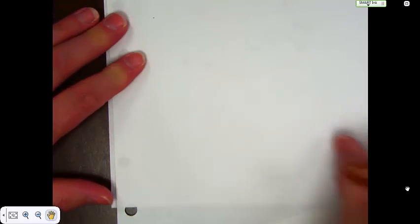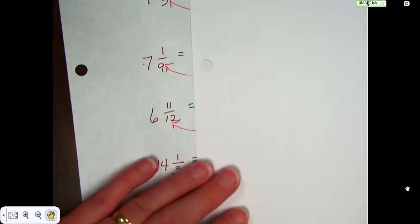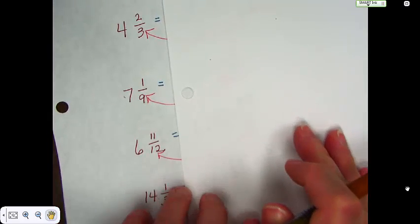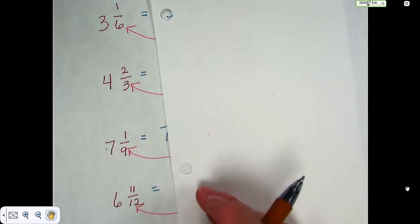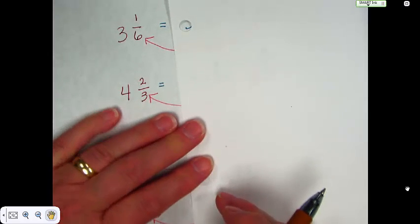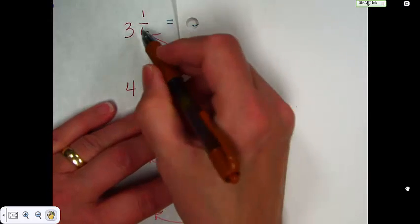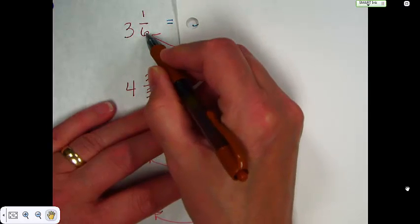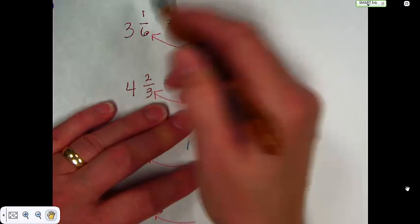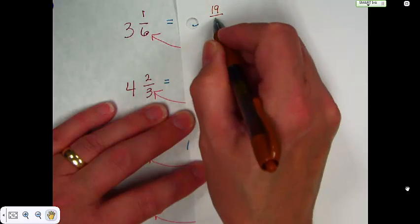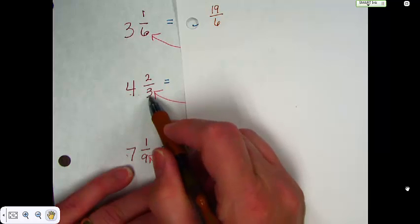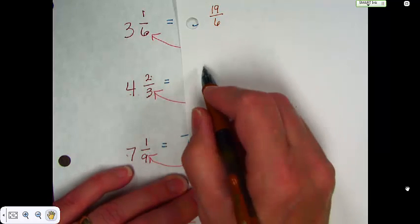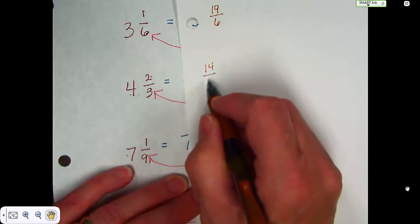So, we're going to do just a few for practice here. I'd like you to do them at your desk while you're listening to the video. We have 3 and 1 sixth. So, we're going to take 3 times 6, which is 18, plus 1, which is 19 over 6. 4 times 3, which is 12, plus 2, 14 over 3.